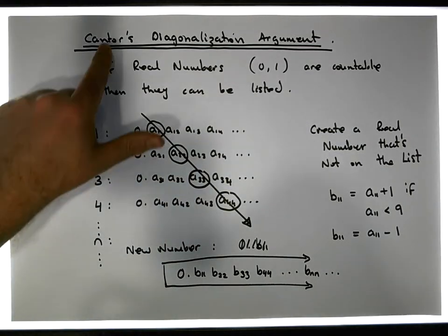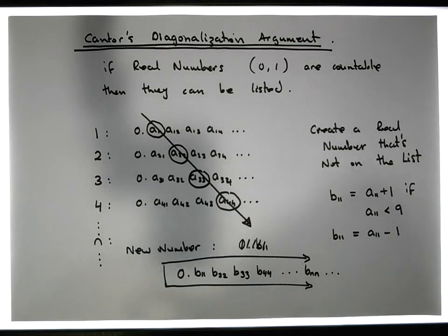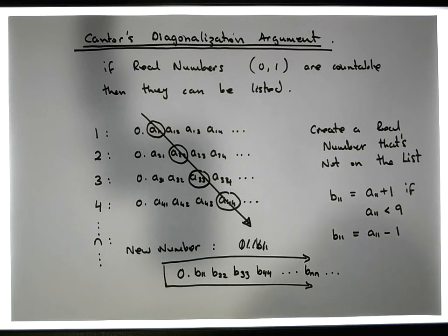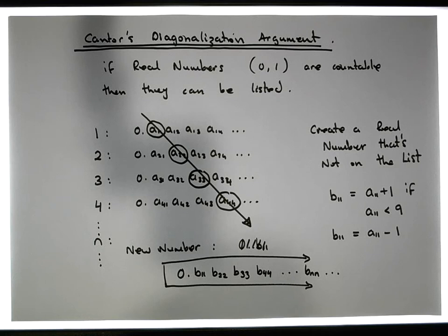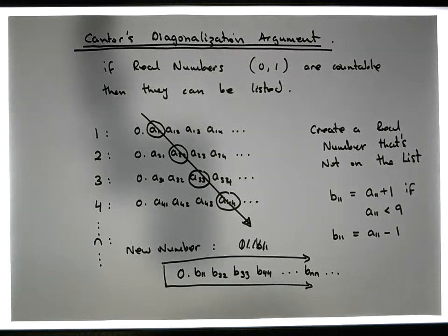Once again, my name is Jonathan Lambert with the Mathematics Development and Support Service at the National College of Ireland. This lightweight argument showing that the real numbers between zero and one are uncountable is called Cantor's diagonalization argument. I hope this video was in some way intuitive and, more importantly, helpful. Thanks for watching.